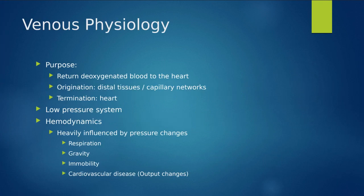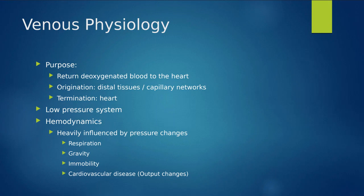Some physiology on the venous system — very basic. The main purpose of the venous system is to return deoxygenated blood back to the heart. Our arterial system brings oxygenated blood to the distal tissues, and then the venous system brings all the deoxygenated blood and waste products back to the heart to be filtered again through cardiac contraction.